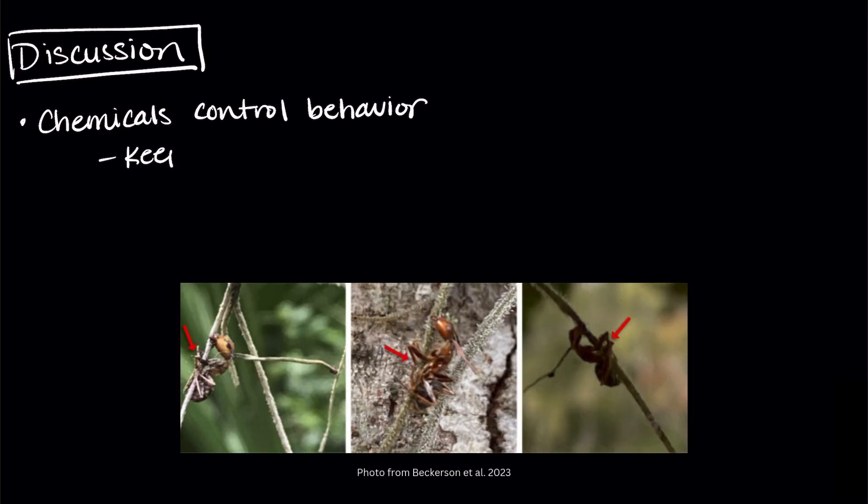What does all this mean? Let's discuss. The results clearly show that chemicals play a role in how the fungus controls ant behavior. Behaviors that are modified will slow the ants down and keep them up in a high location. This ensures that the fungus is in the right spot to spread its spores.